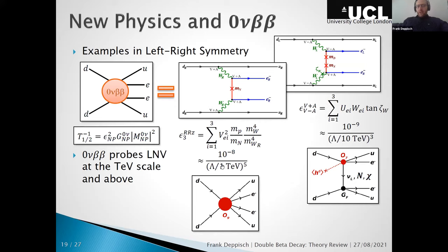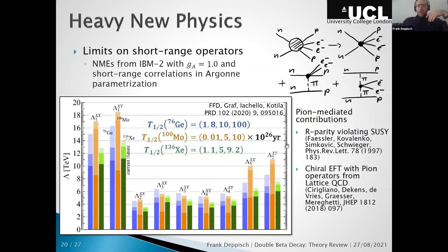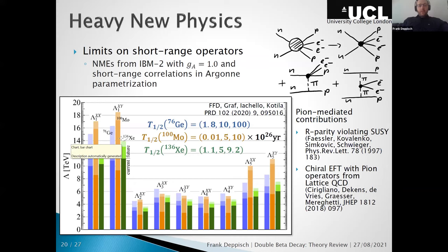The new physics probed is around 1–10 TeV, for example a right-handed W boson of a few TeV. Writing down all effective operators with different Lorentz structures, limits from current experiments are shown alongside future experiments. Current limits are at a few TeV, and in the far future they will extend to around 18 TeV for some operators — specifically those enhanced by pion-mediated contributions.